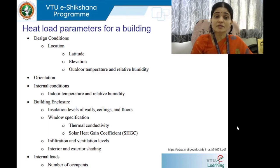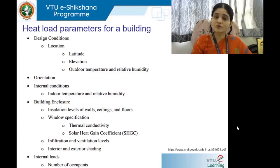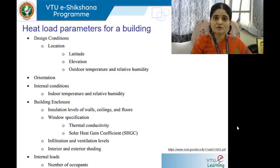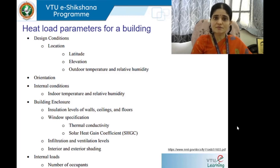Secondly, orientation of the building. We have the four cardinal directions — north, south, east, west — and also the sub-cardinal directions: northwest, northeast, southeast, southwest. These also impact the functioning of a building with respect to heat gain and other aspects. So orientation of the building becomes a crucial aspect in understanding heat load parameters.